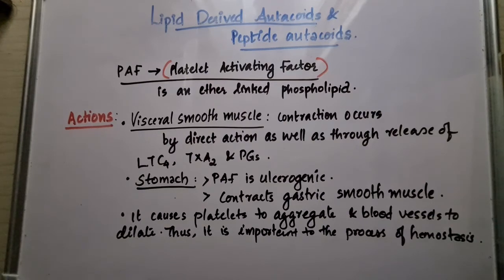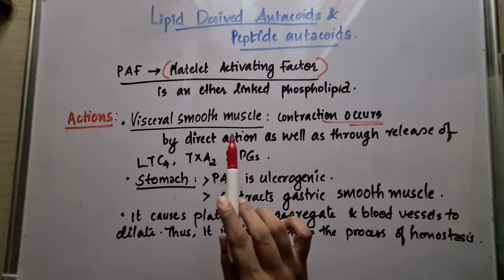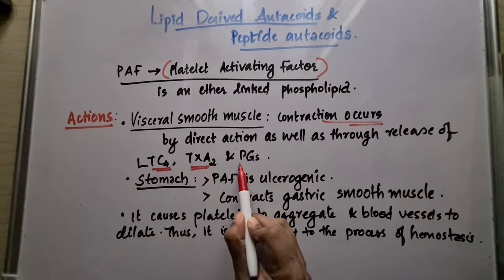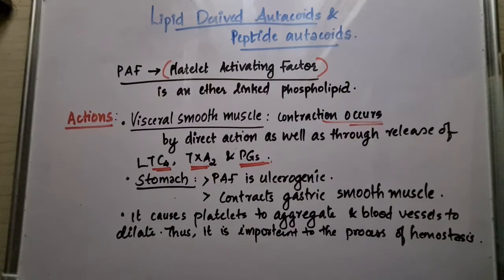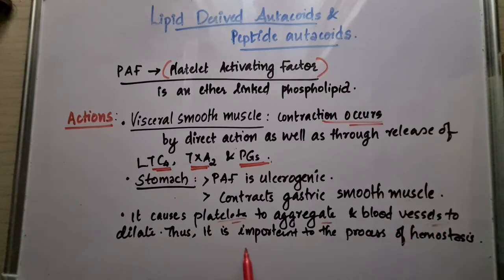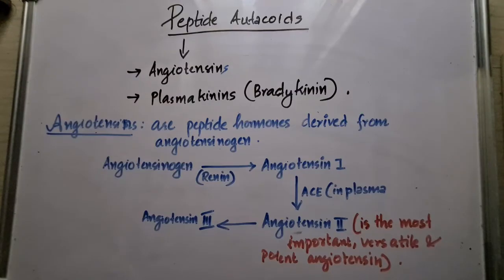The third lipid-derived autacoid is platelet activating factor (PAF), an ether-linked phospholipid. In visceral smooth muscles, PAF causes contraction both by direct action and through the release of leukotriene C4, thromboxane A2, and prostaglandins. PAF is ulcerogenic in nature and contracts gastric smooth muscles. It also causes platelet aggregation and dilation of blood vessels, making it important in the process of hemostasis.